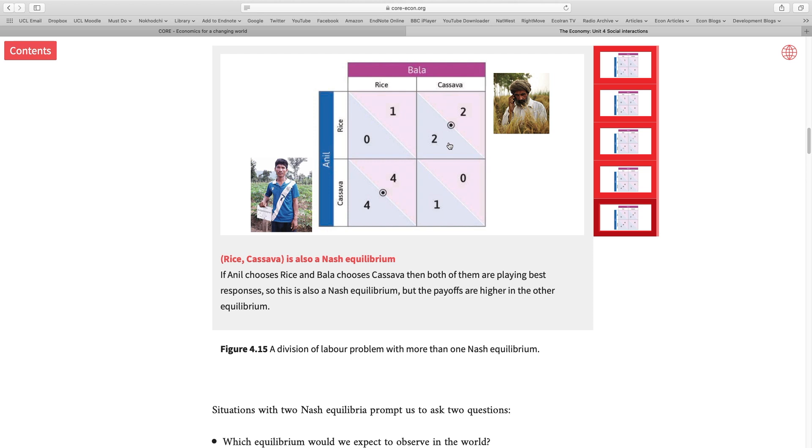However, in reality players can end up in this better equilibrium on the basis of expectation. Let's say Anil expects Bala to produce rice, why? Because you know, generation after generation people have been producing rice in Bala's district. So on the basis of this expectation, Anil produces cassava and these both players end up in the better equilibrium without talking with each other.